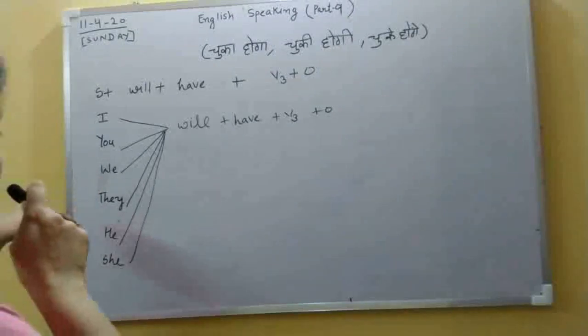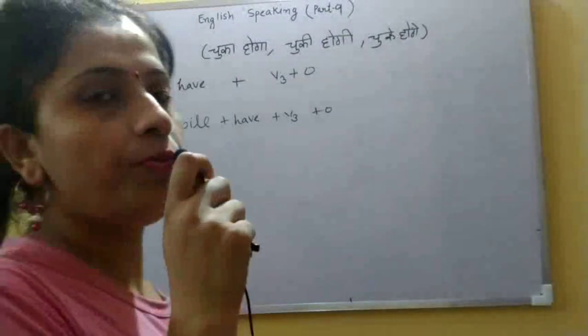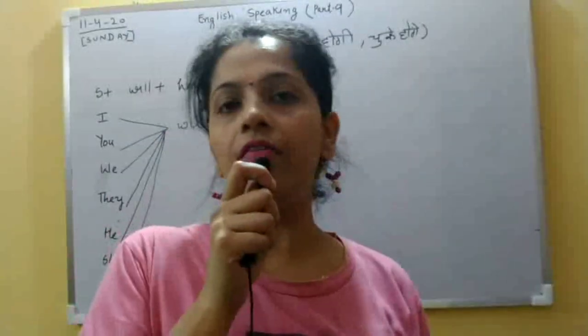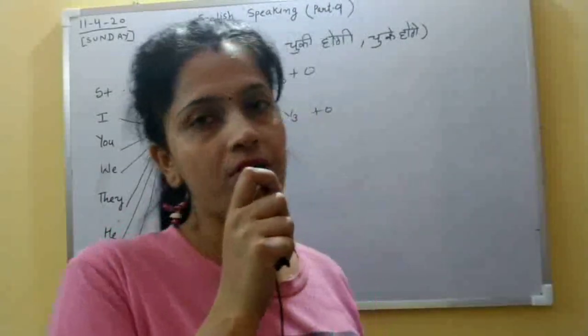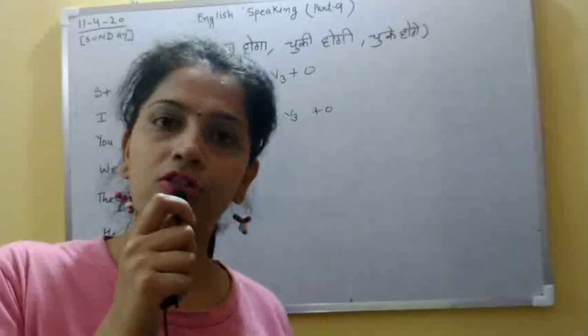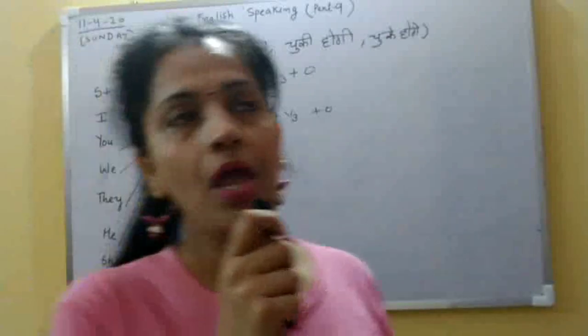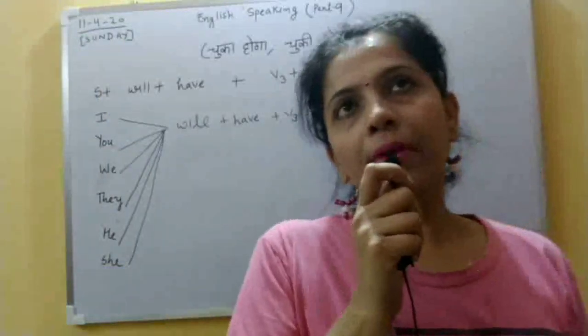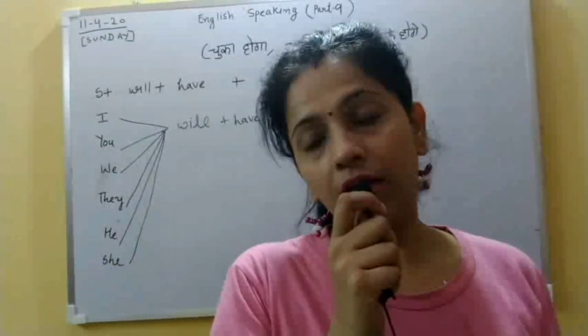So for all subjects — I, you, we, they, he, she — the structure is: will have plus verb third form plus object.